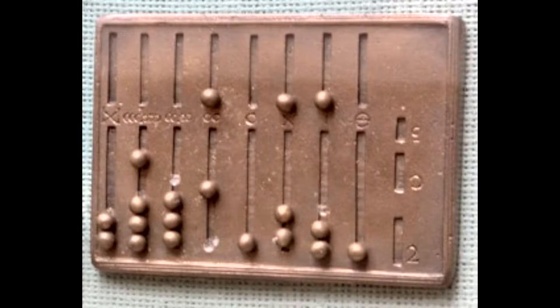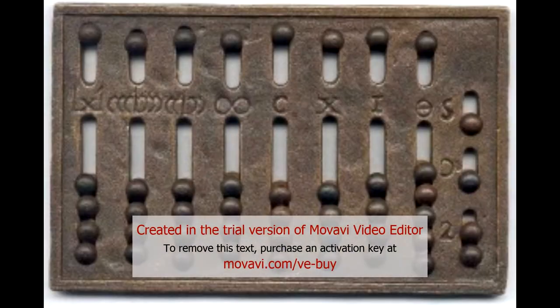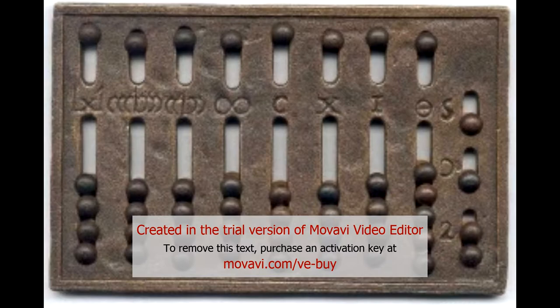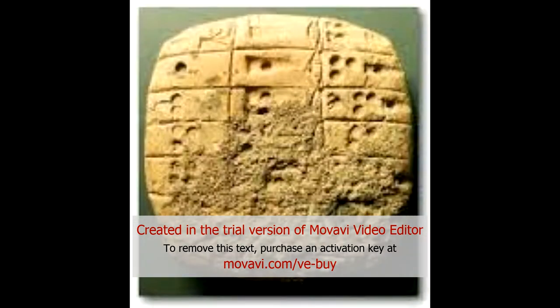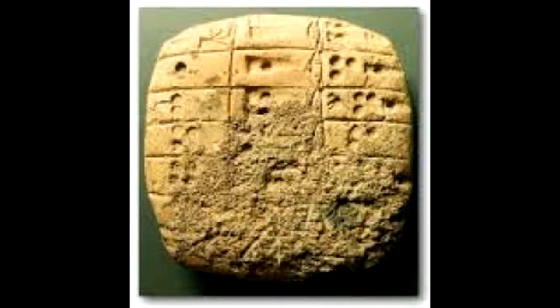Back in 2700 to 2300 BC in Mesopotamia, the abacus was known as the Sumerian Abacus. It was a table of columns representing numbers based on factors of 60. This primitive device was believed to have been used for addition and subtraction, but not for more complex calculations like multiplication and division.